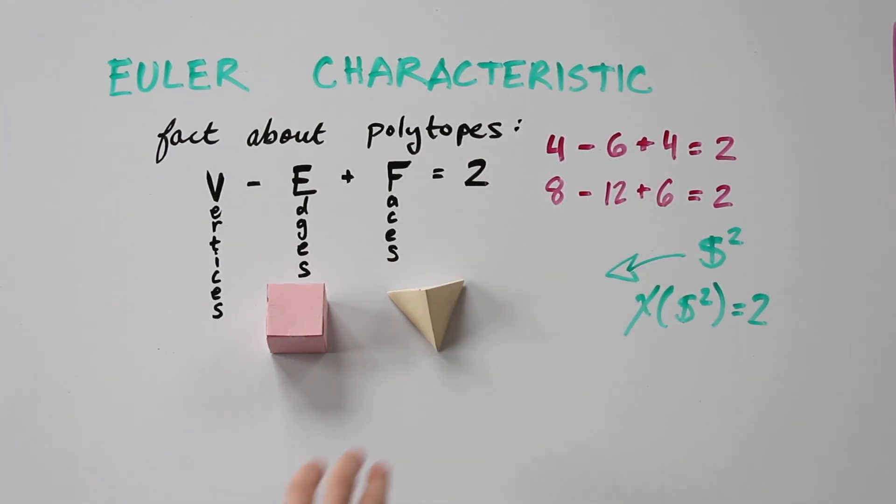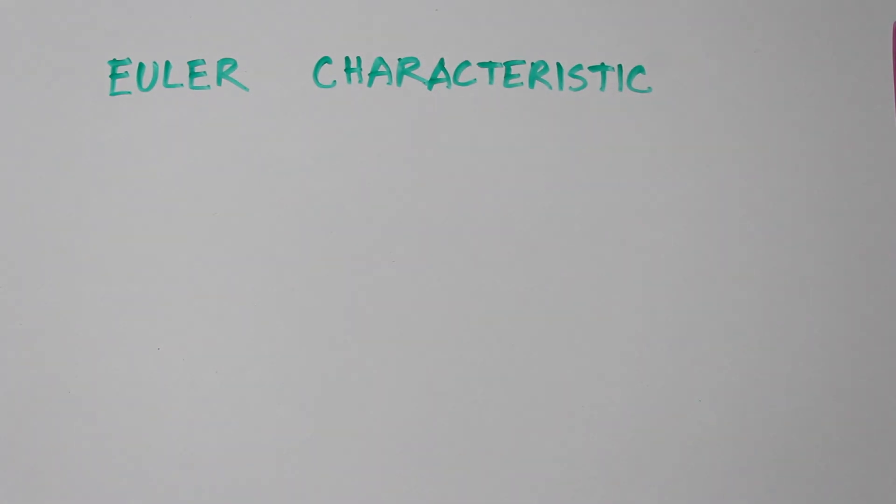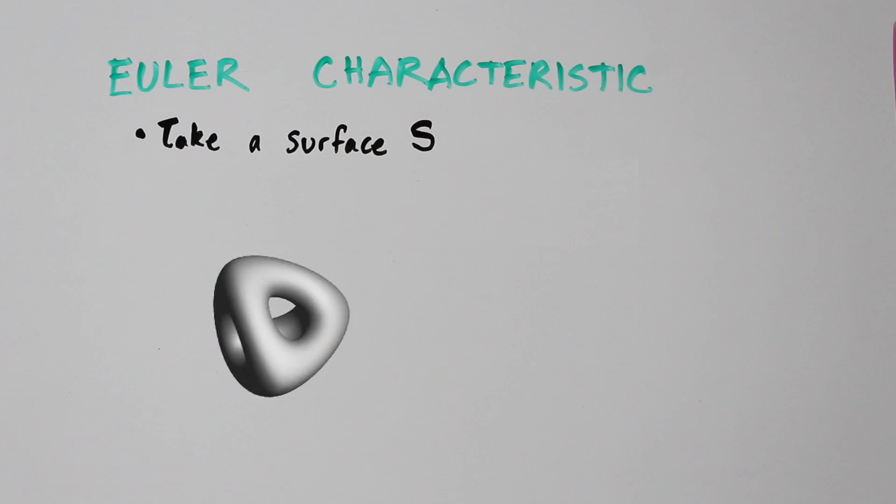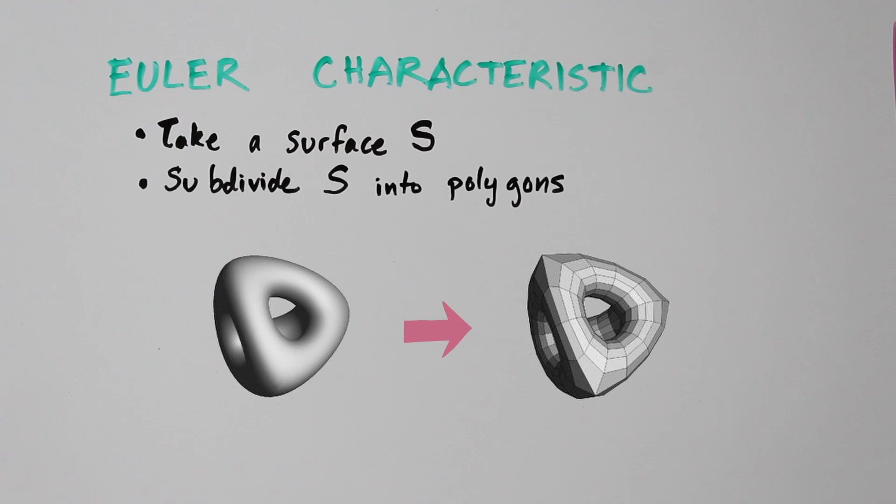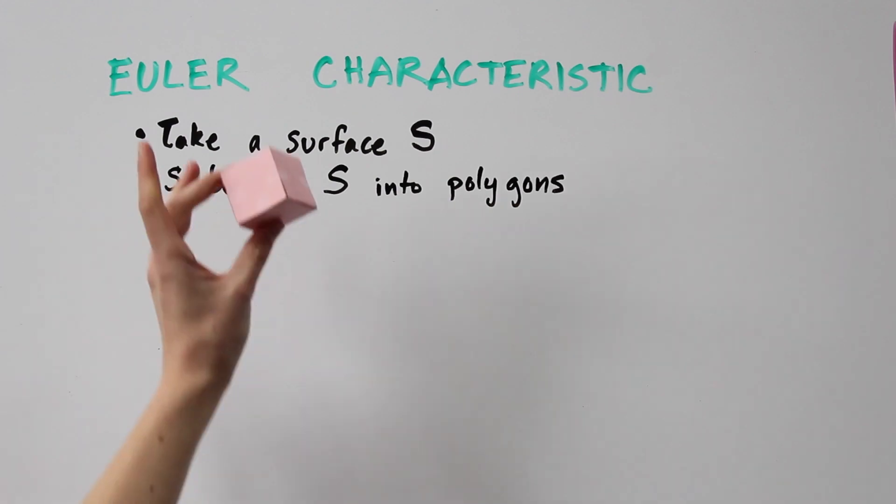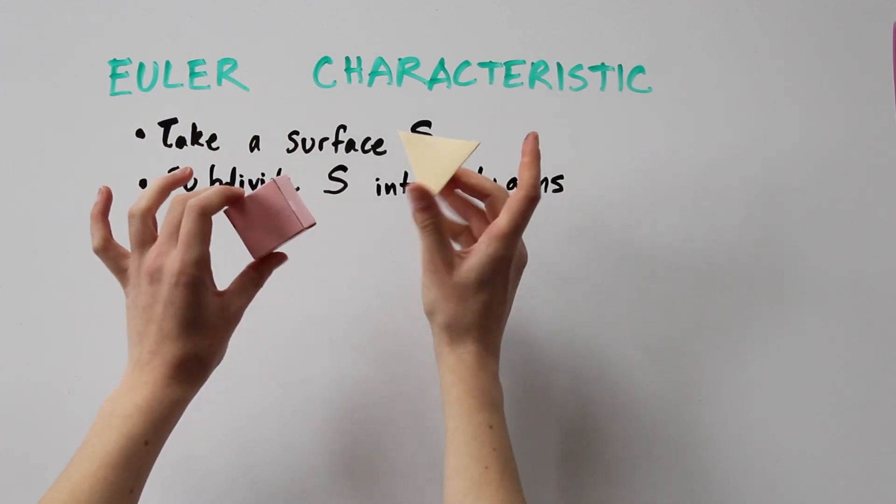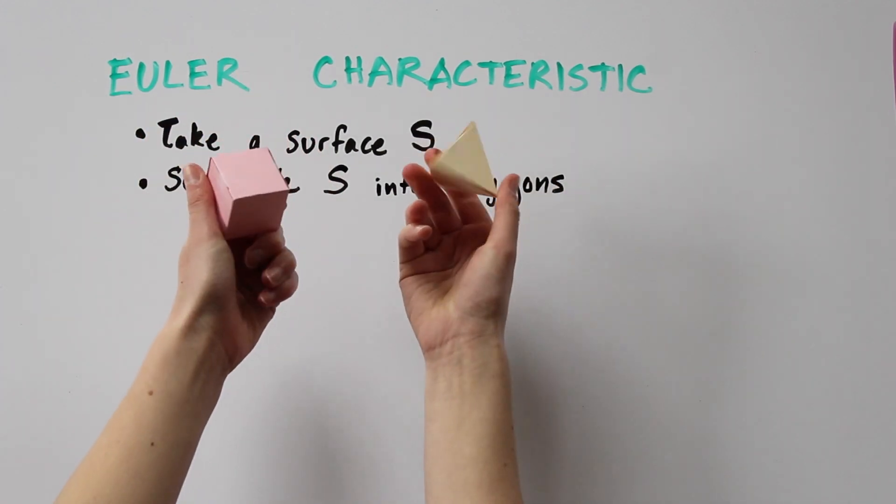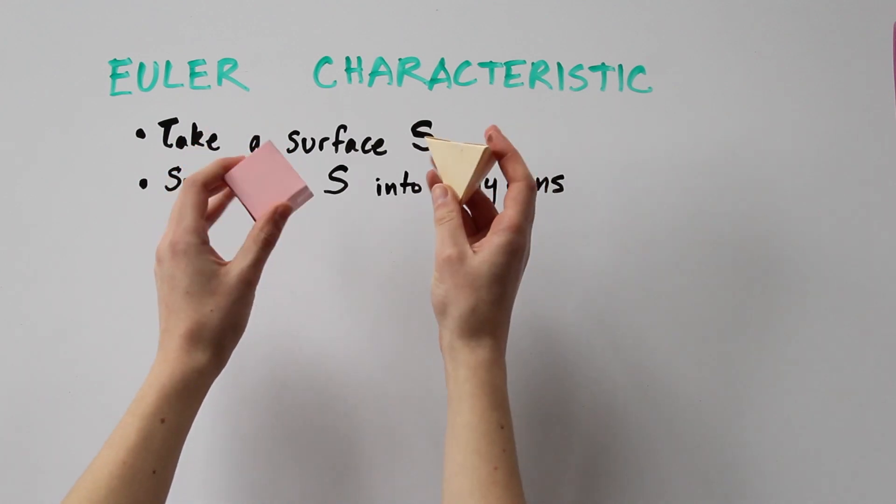So to find the Euler characteristic of any surface in general, let S be our surface, which we imagine to be something smooth, without vertices or edges. And now we subdivide it into polygons. So both the cube and the tetrahedron are polyhedral subdivisions of the sphere.